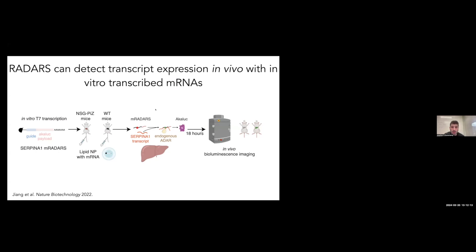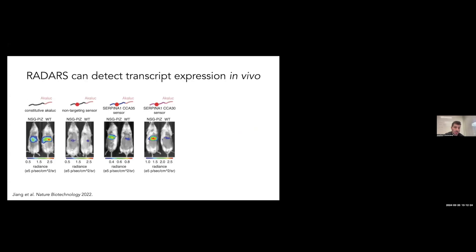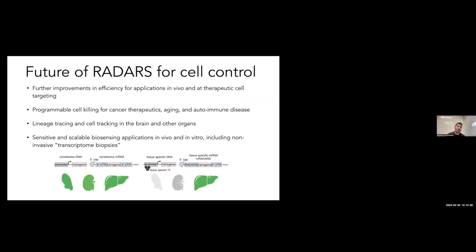Lastly, this system actually functions in vivo. We can formulate it as a lipid nanoparticle and actually deliver it into a mouse to sense. Here we're sensing a specific gene in a specific mouse strain, this alpha-1 antitrypsin gene from humans. We can see that compared to this constitutive expression, this is background expression from a non-targeting sensor. Two sensors that are activated and sense only this mouse, this NSG-PIZ mouse, you can see they have significant activation. So we can actually formulate this for in vivo use. We're very excited about RADARS as well as a therapeutic tool as well as a foundational tool for understanding and targeting cell types, and we're actively working to improve it for applications such as cancer therapeutics, aging, and autoimmune disease.